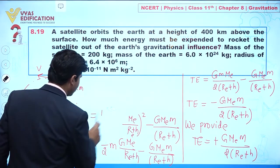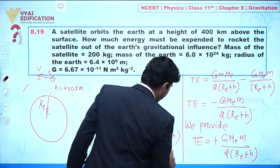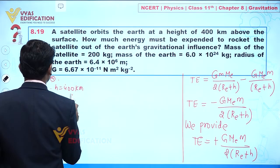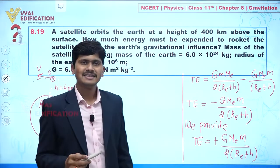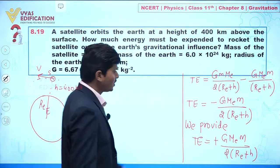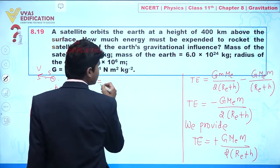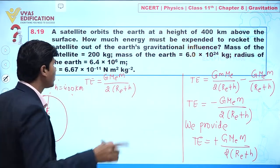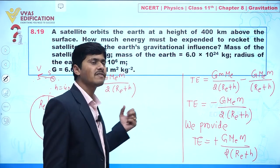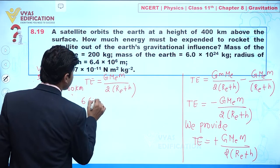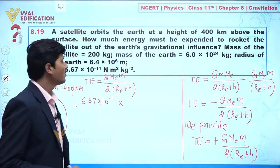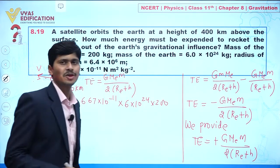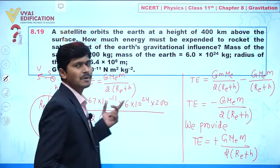Now let's put in all the values. Energy equals G·Me·m divided by 2(Re + h). The value of G is 6.67 × 10⁻¹¹, mass of Earth is 6 × 10²⁴ kg, and the mass of the satellite is 200 kg.